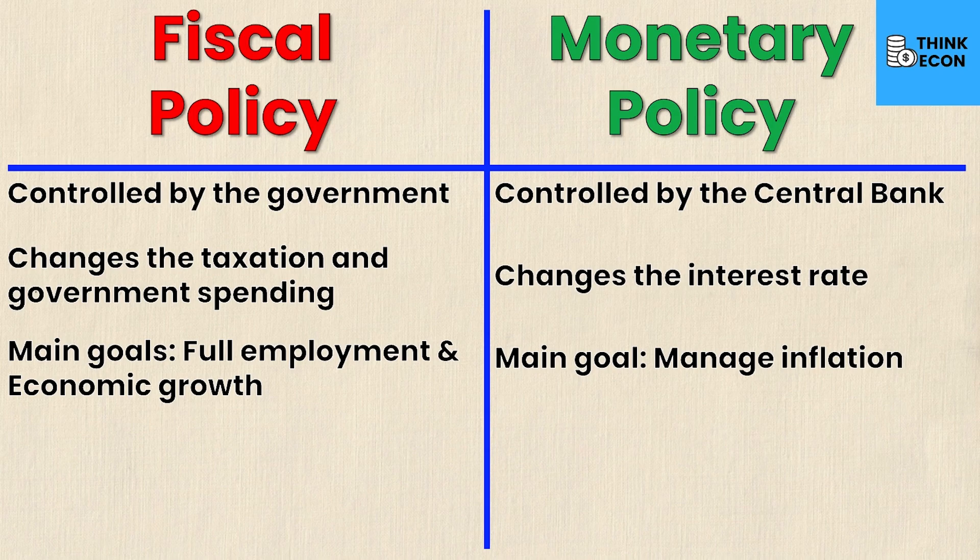The fourth difference is that fiscal policy looks at the supply side and monetary policy looks at the demand side of an economy. On the supply side, think of investment and production, and on the demand side, think of consumption and retail investment.